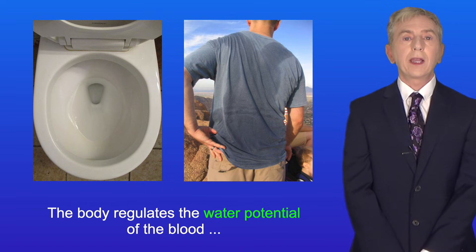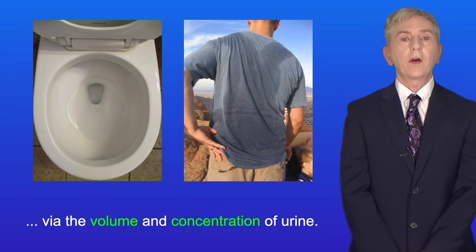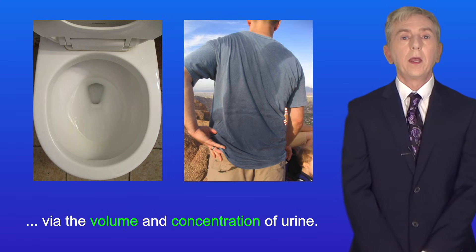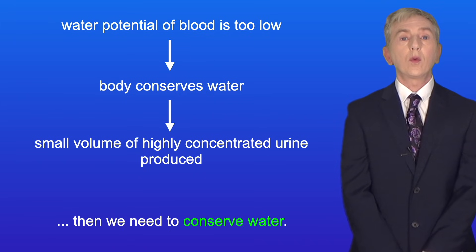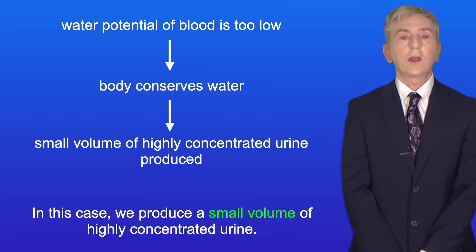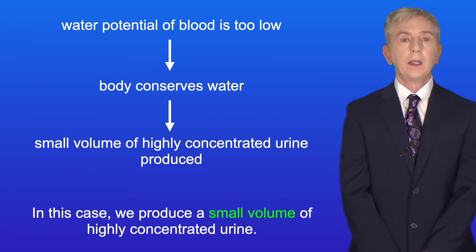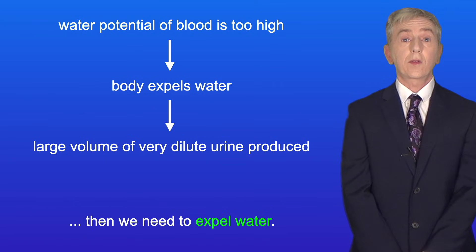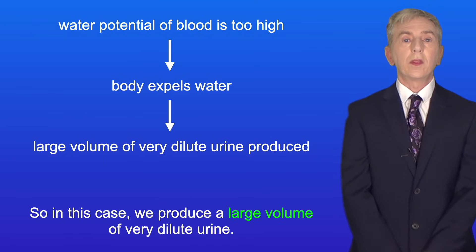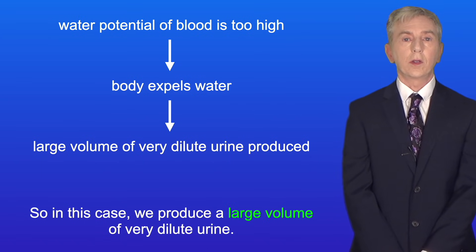The body regulates the water potential of the blood via the volume and concentration of urine. If the water potential of the blood is too low, then we need to conserve water — in this case we produce a small volume of highly concentrated urine. However, if the water potential of the blood is too high, then we need to expel water, so in this case we produce a large volume of very dilute urine.